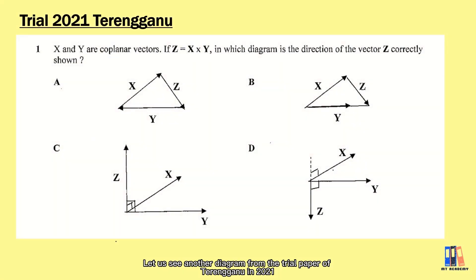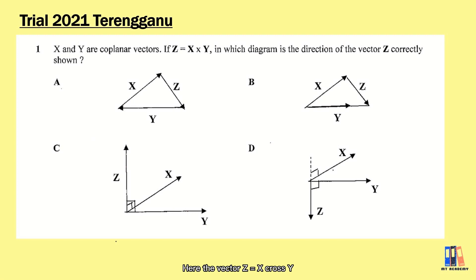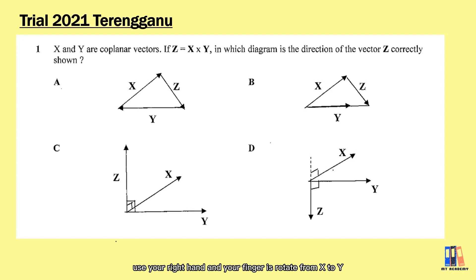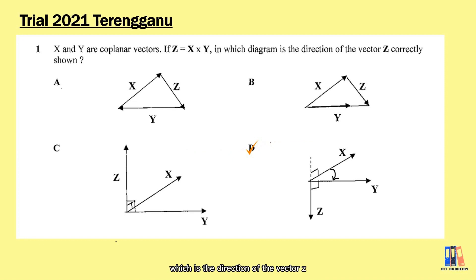Let us see another diagram. Here the vector z is equal to x cross y. What you do is use your right hand and rotate your fingers from x to y, and you will find that your thumb is pointing downward, which is the direction of the vector z.